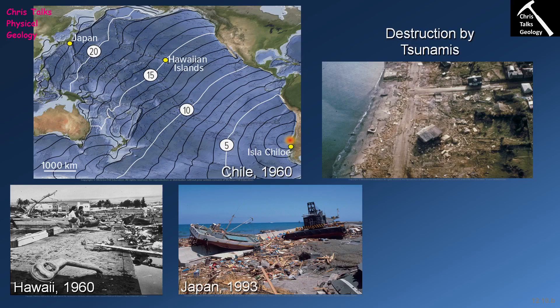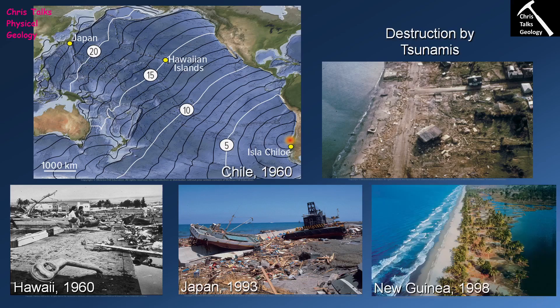Other examples of classic tsunamis are the Japanese tsunami of 1993, and then of course there was the relatively recent damage caused to the Fukushima nuclear power plants due to a recent earthquake and related tsunami, which also occurred in Japan. Another classic example is New Guinea in 1998, where the coastline was hit very hard once again due to a tsunami that formed at a convergent plate boundary. Thank you for watching everybody and have a good day.